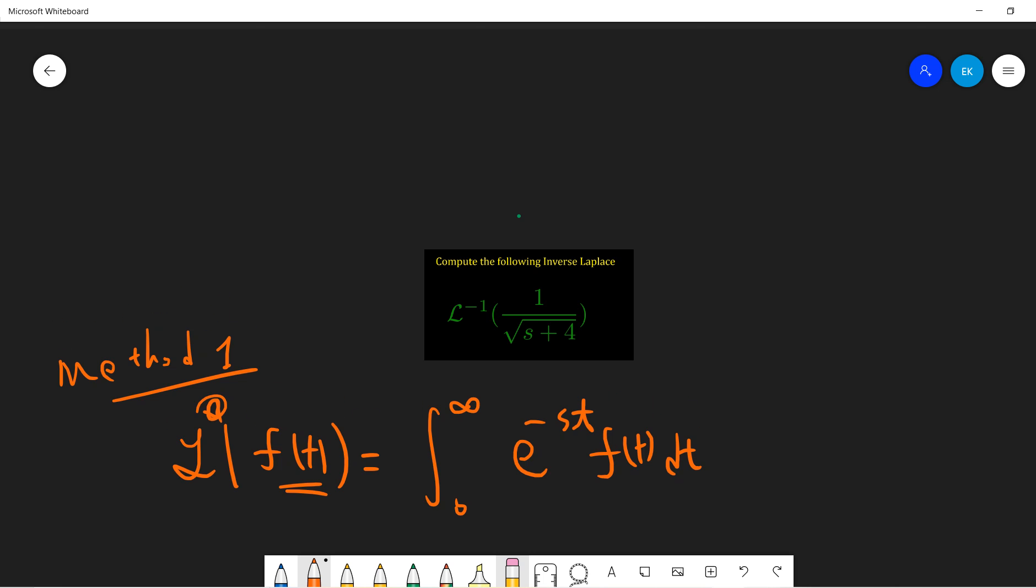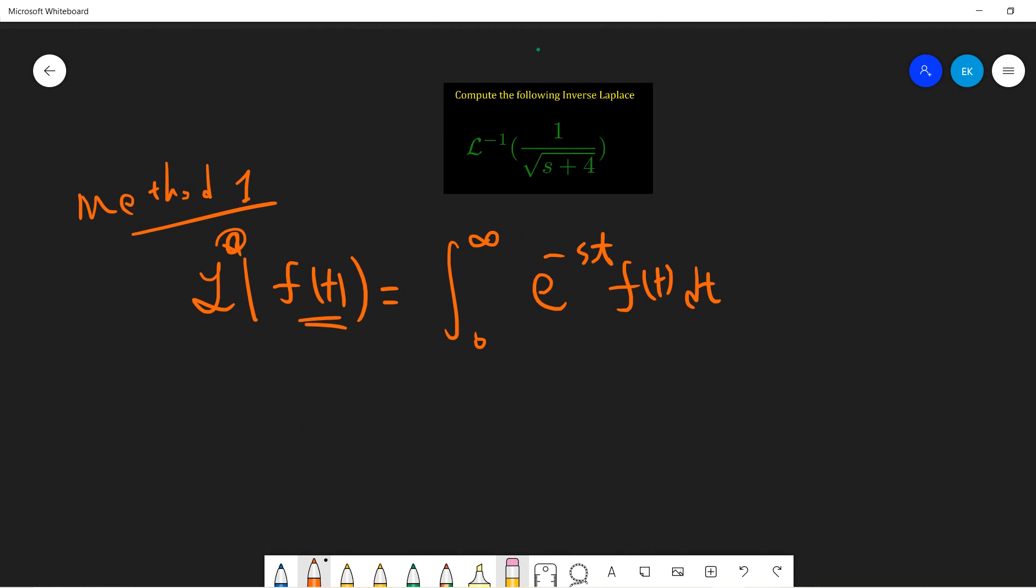Method one is that we hope to find something which you can get this answer. So, naively, let's first check 1 over square root of t, and let's see what we get. So, we get 0 to infinity, exponential minus S of t, 1 over square root of t, dt.